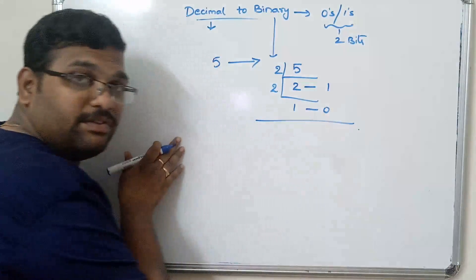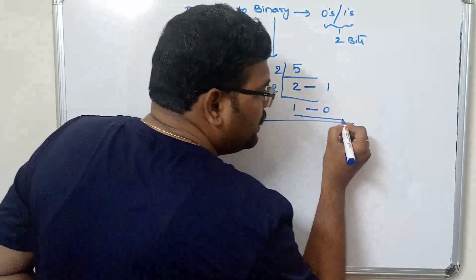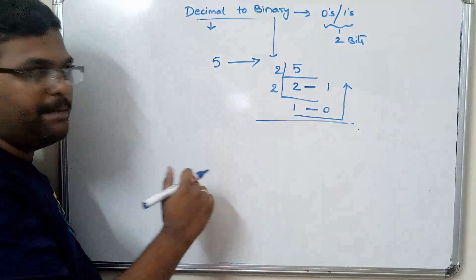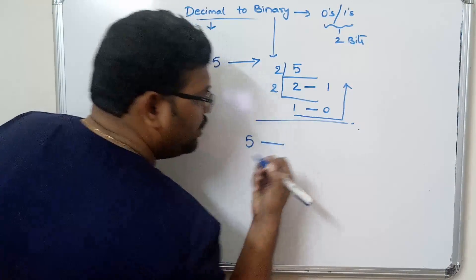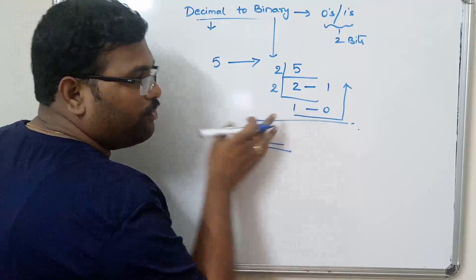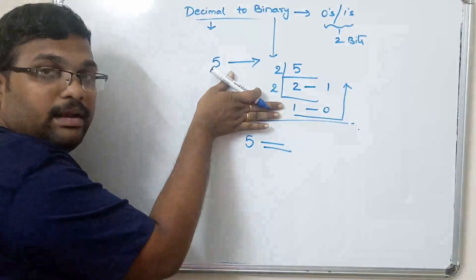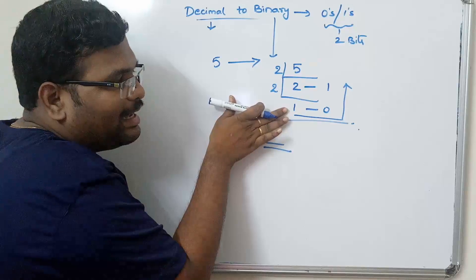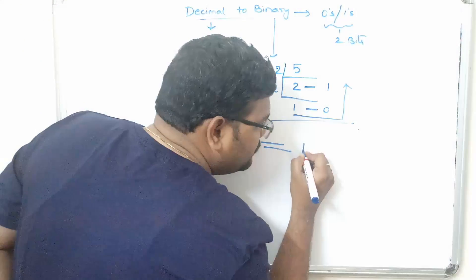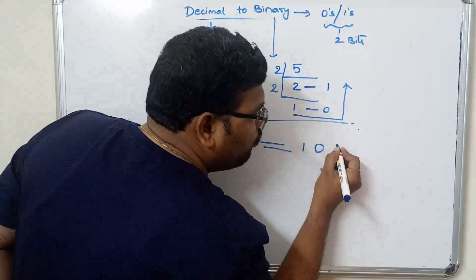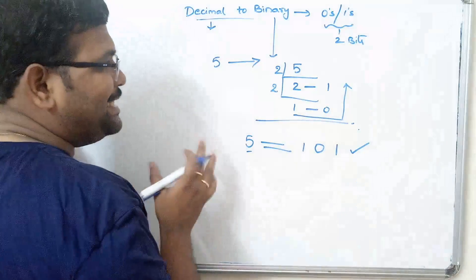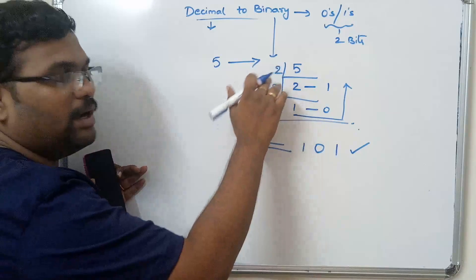Next, repeat the same process: 2 ones are 2 and the remainder is 0 — stop here. The sequence of remainders read from downward to upward gives the binary equivalent. So decimal 5 equals binary 1 0 1, reading the remainders from lower to higher.